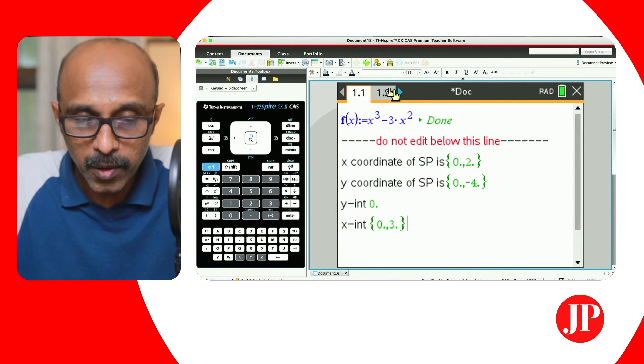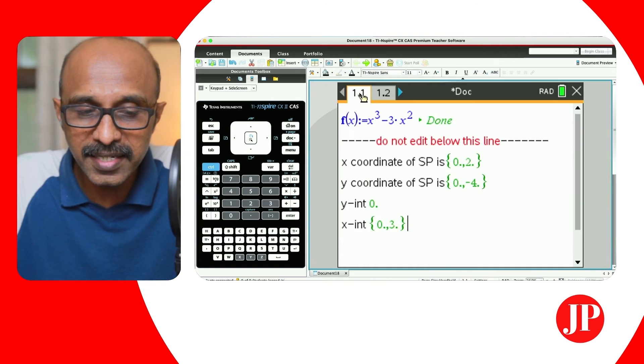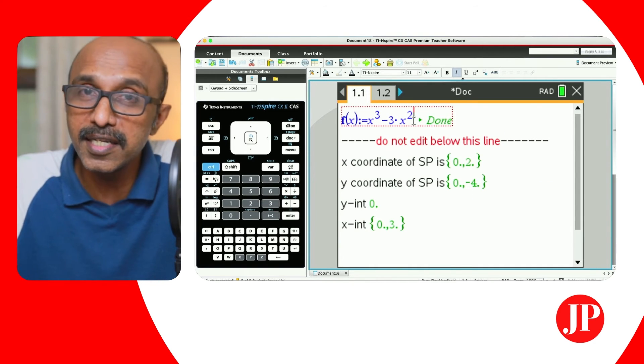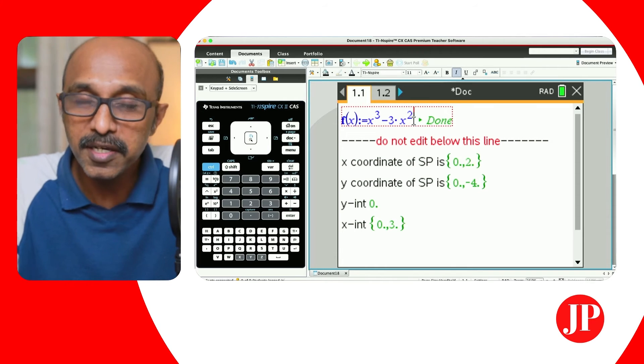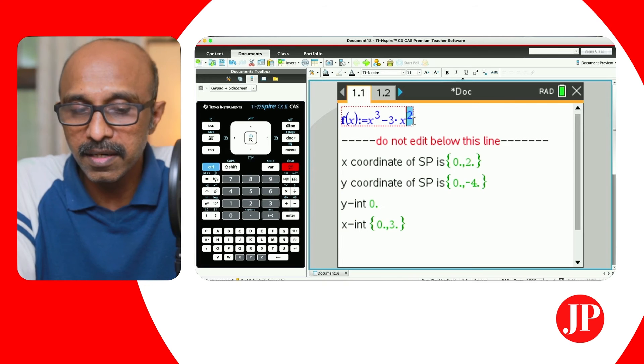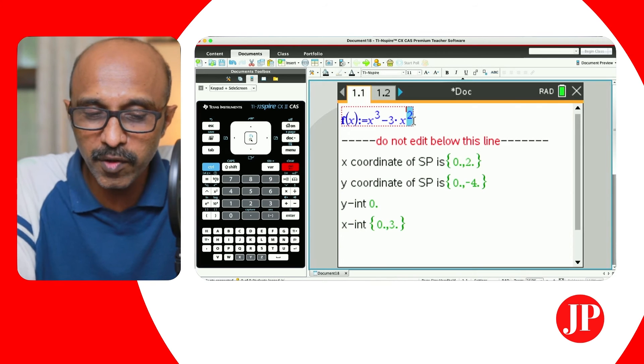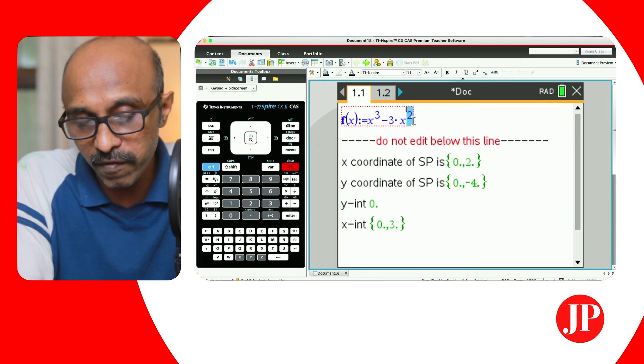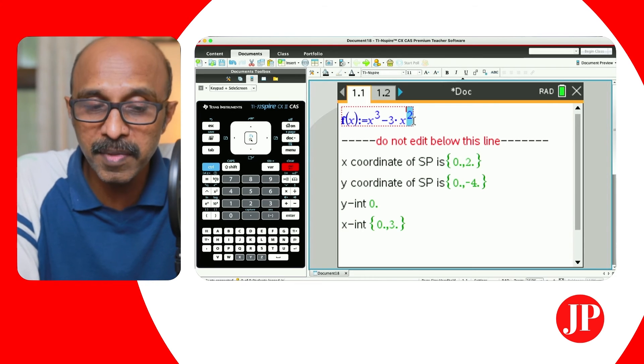Now this is the widget, this is like a template here. When we have to find for any question that's given in the test or the exercises that you're working on, you can go and make changes here. When you make the changes, automatically the widget as you've prepared, the stationary point x-coordinate, y-coordinate, the coordinates of the y-intercept and the x-intercept, all those things will be updated.